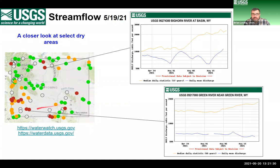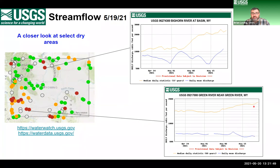Moving south into the Green River Basin, the Green River near Green River gauge conditions are even worse than in the Bighorn Basin. Currently the flow is about 700 CFS mean daily, and normally this time of year it should be closer to 1,700 to 1,800 CFS — about a third to 40% of what the normal flow should be this time of year in the Green River Basin.